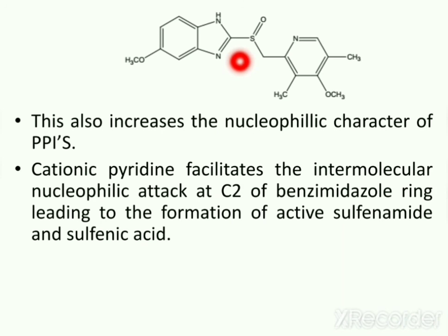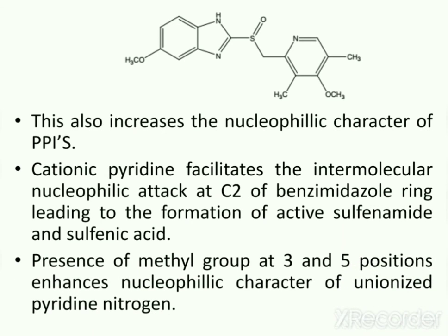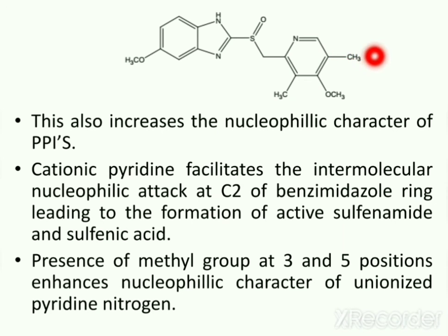These two active metabolites — sulfenamide and sulfenic acid — inhibit the proton pump. Additionally, the presence of methyl groups at C3 and C5 positions enhances the nucleophilic attack of the unionized pyridine nitrogen, helping to enhance the nucleophilic character of the pyridine nitrogen.